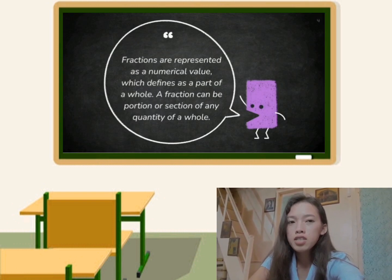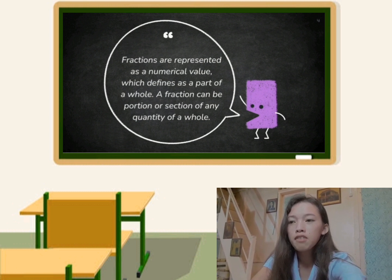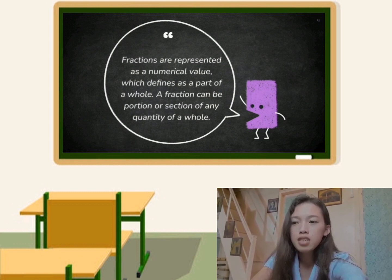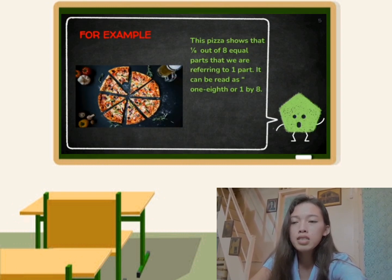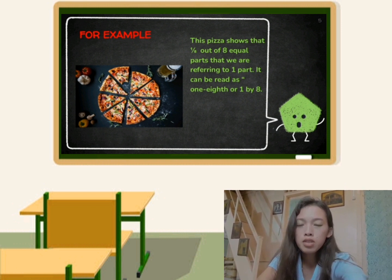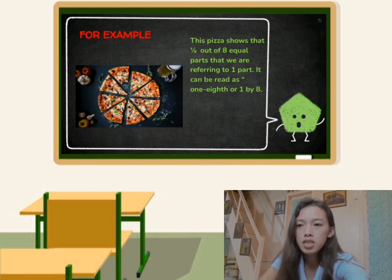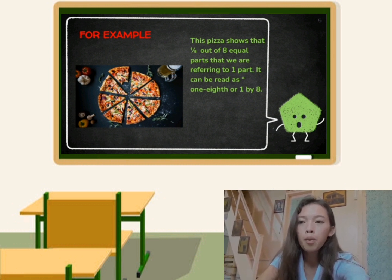Fractions are represented as a numerical value which defines a part of a whole. A fraction can be a portion or section of any quantity of a whole. For example, this pizza shows 1 over 8, or one out of 8 equal parts. It can be read as one-eighth or 1 by 8.